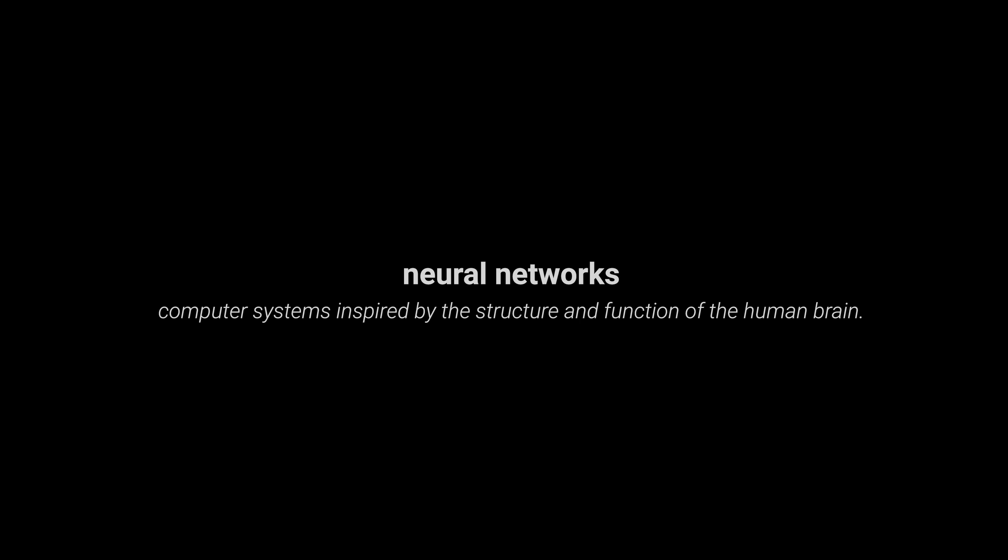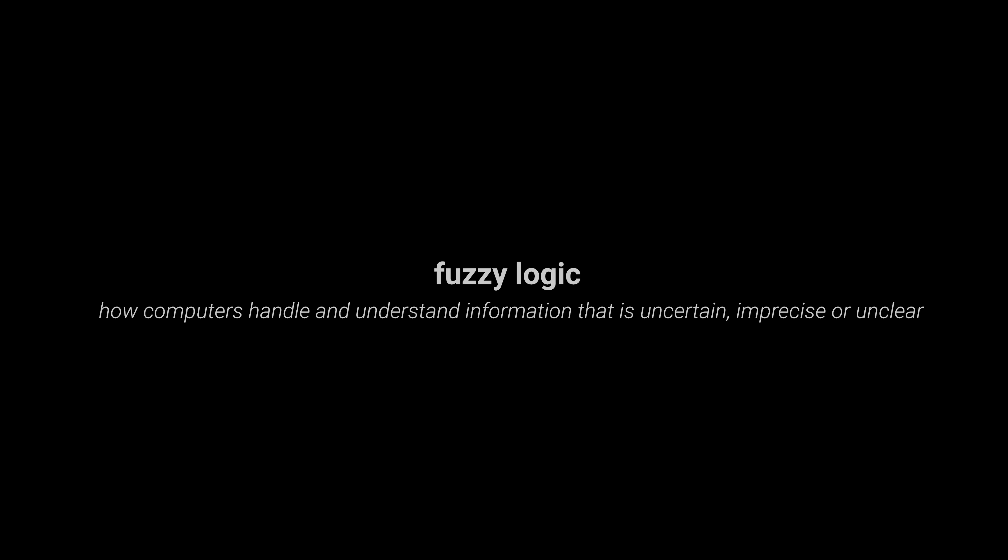ChatGPT specifically harnesses the following areas of artificial intelligence. One, machine learning — a way for computers to get better at certain tasks by learning from a wide variety of data. Two, natural language processing — a way for computers to communicate naturally with us by understanding and generating human-like language. Three, neural networks — a type of artificial intelligence inspired by the structure and function of the human brain. And four, fuzzy logic — a mathematical system used to represent and understand information that is uncertain, imprecise, or unclear. You know, fuzzy.